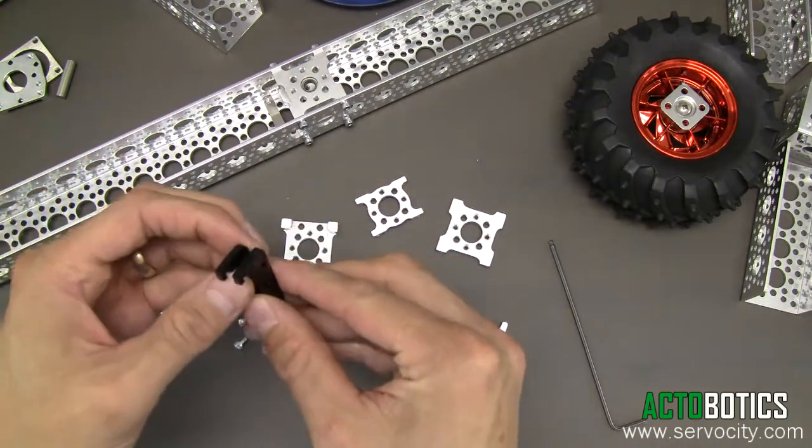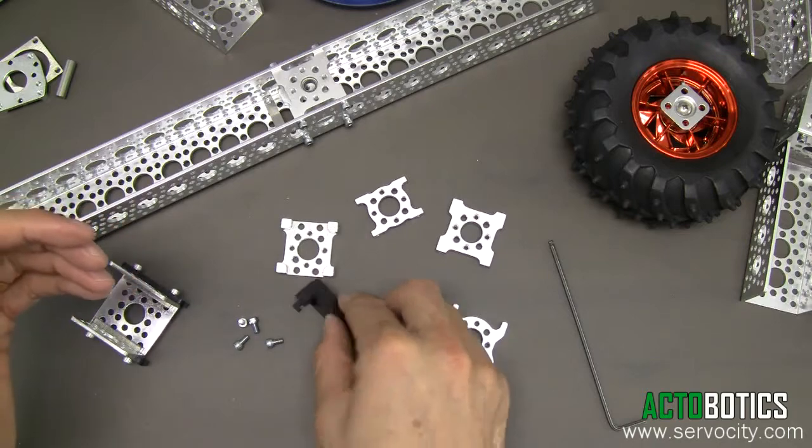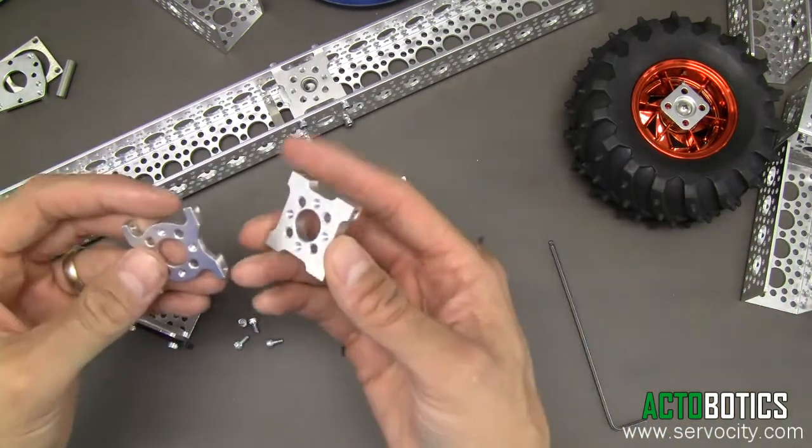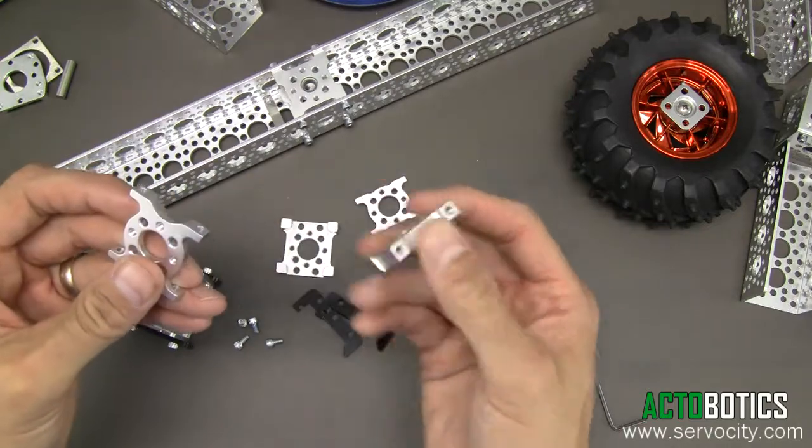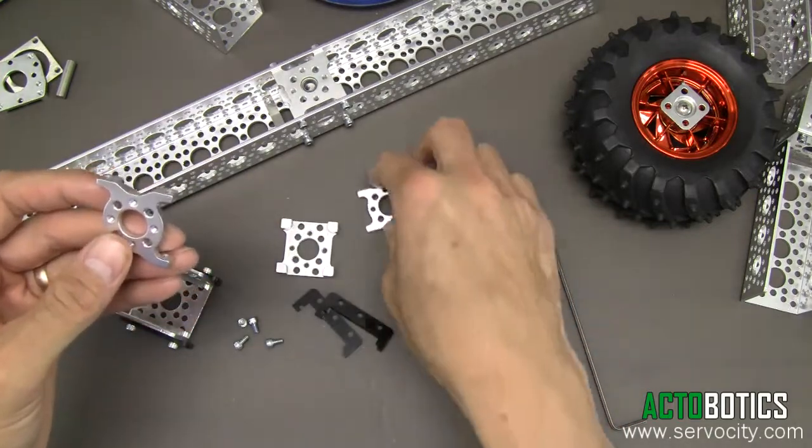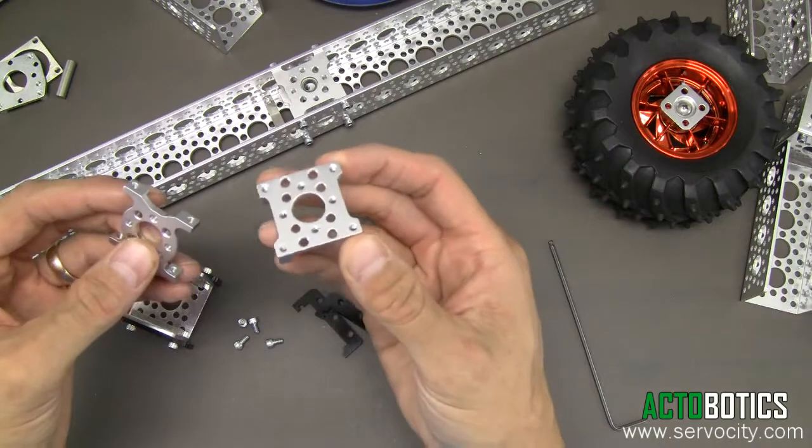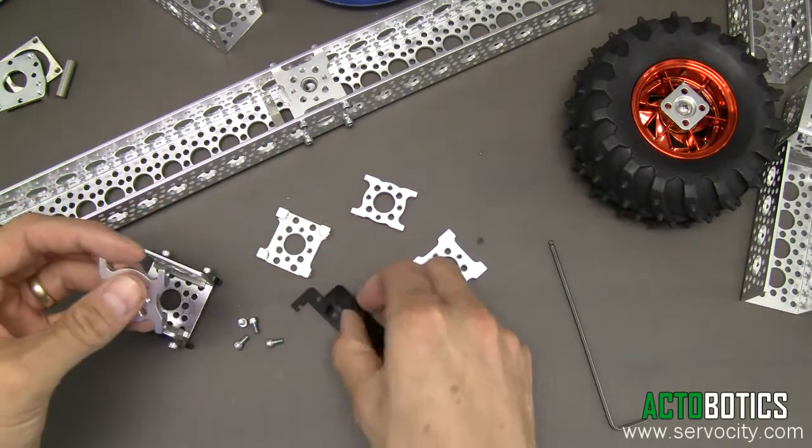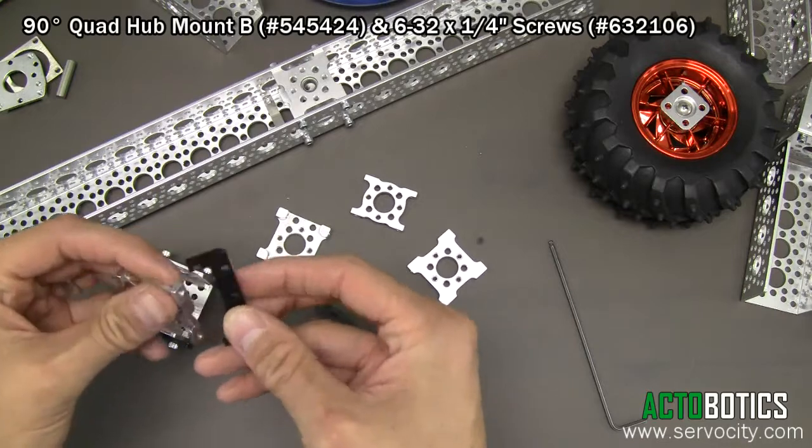These are Channel Slider F, sold in pairs. You can put them together with any of our Actobotics parts - mounts, screw plates, or quad mounts. I'm going to demonstrate how you can assemble these.